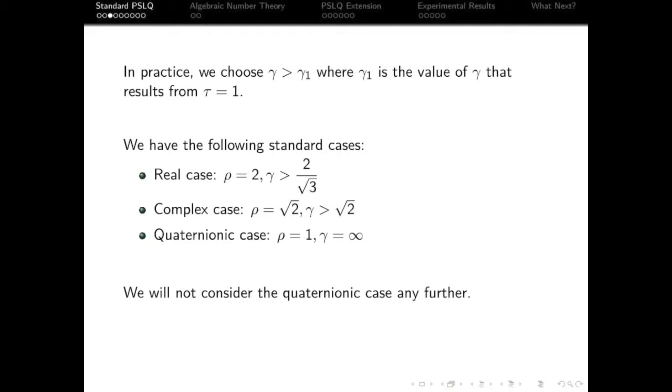So there's three standard cases which the literature all just states explicitly. In our real case, rho is two, so our gamma is two on root of three. In the complex case, we have rho as being two, which gives us our root two, which gives us a gamma greater than root two.